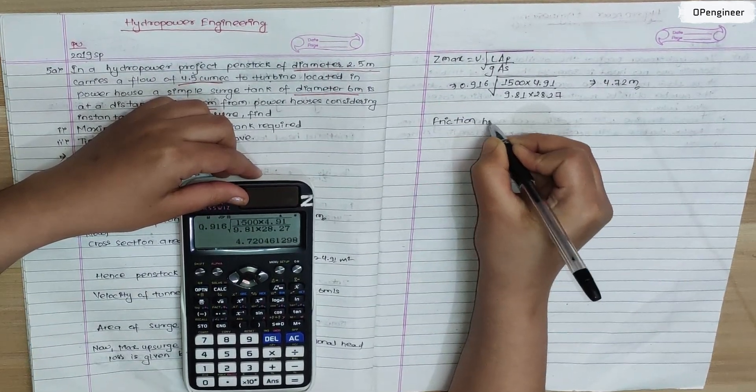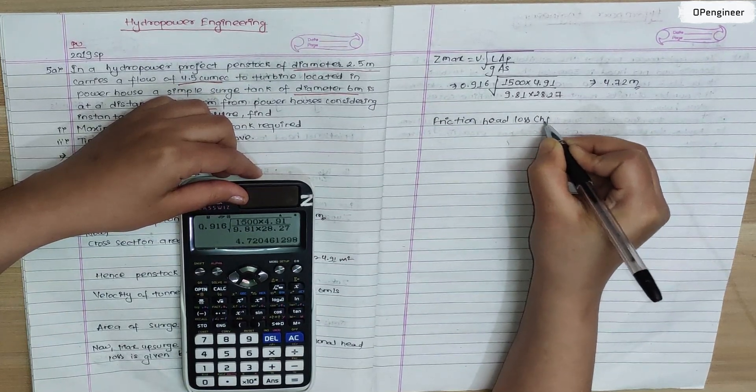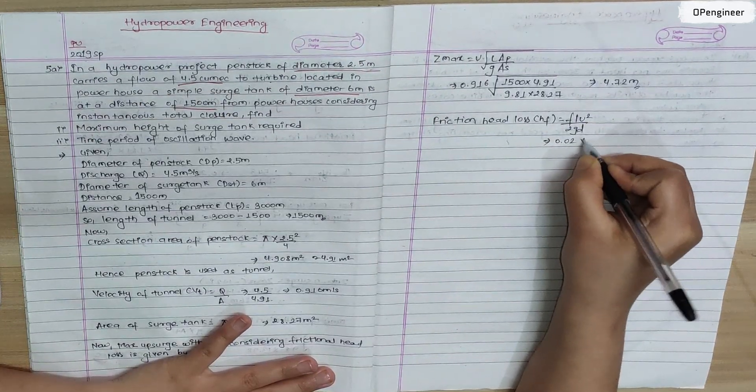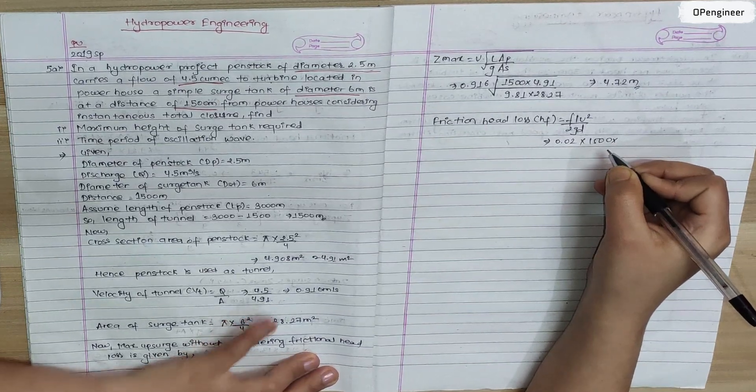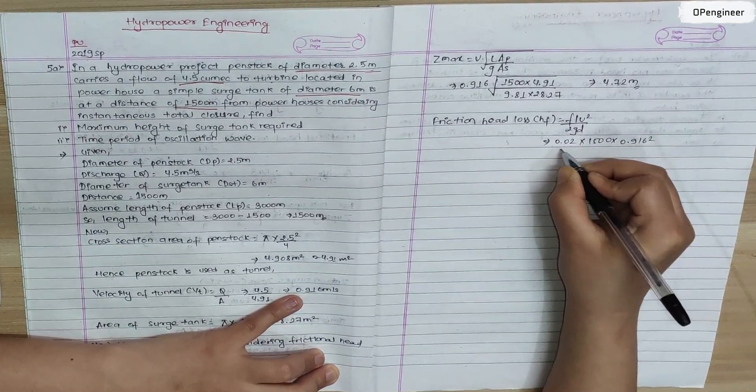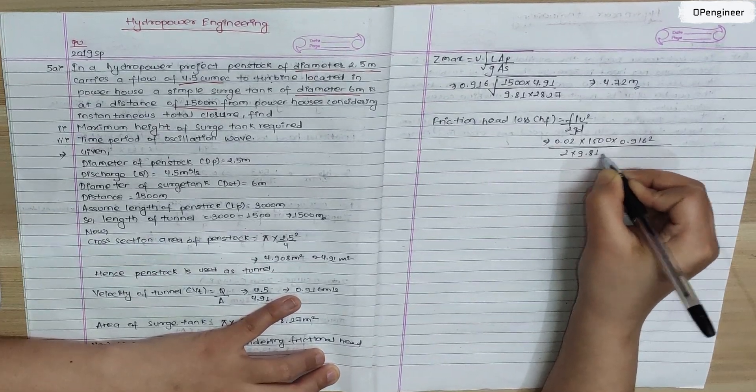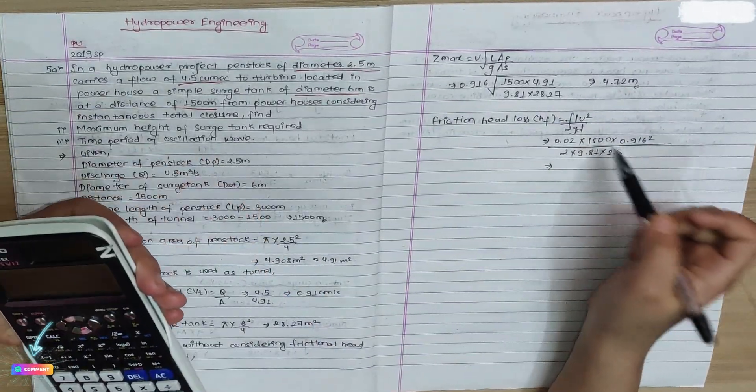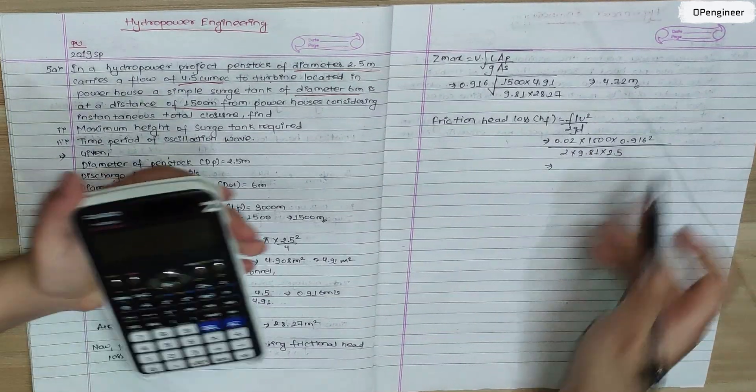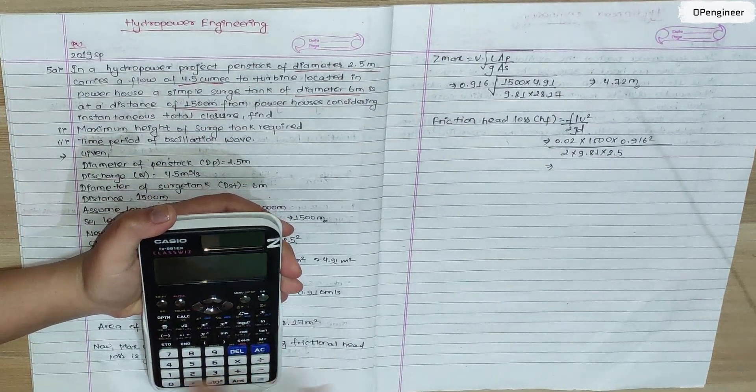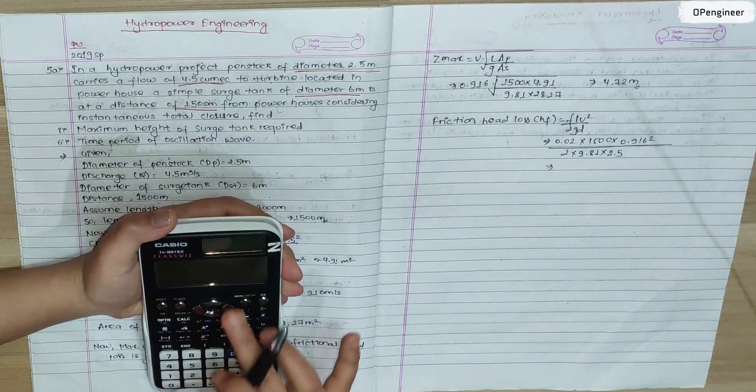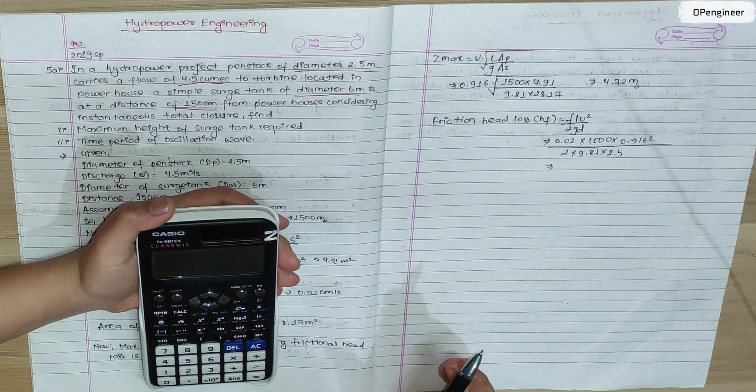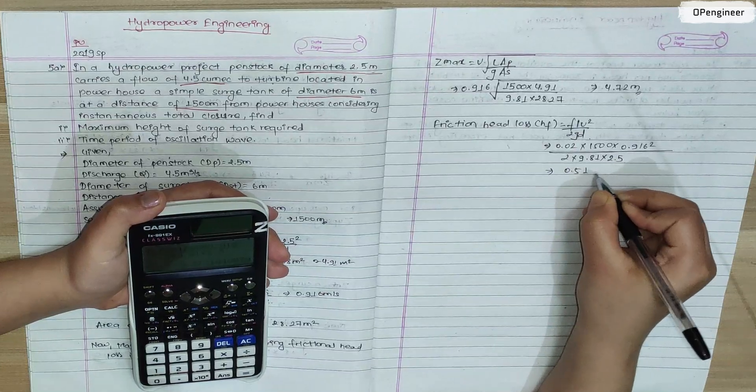This is friction head loss. Frictional head loss formula is F L V squared by 2 G D. F is 0.02 into length is 1500, V is 0.916 squared, 2 into 9.81 into 2.5. So length of tunnel and velocity of tunnel, diameter of tunnel. So now 0.02 into 1500 into 0.916 squared by 2 into 9.81 into 2.5. This is the friction head loss, loss is 0.51 meter.